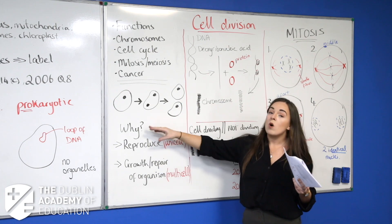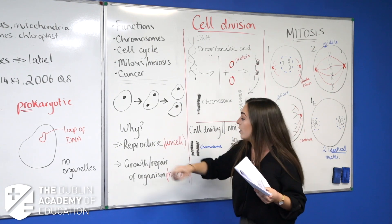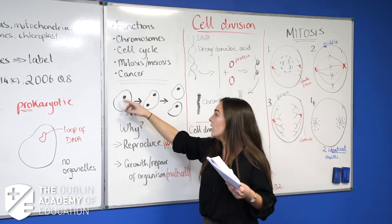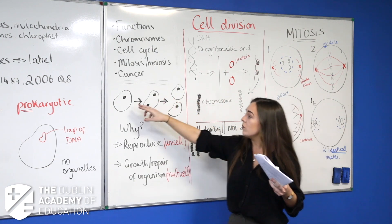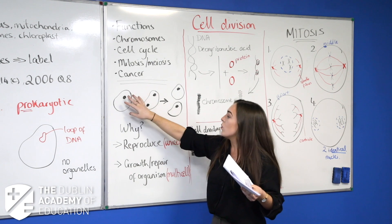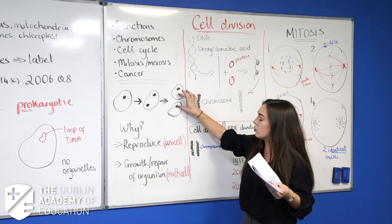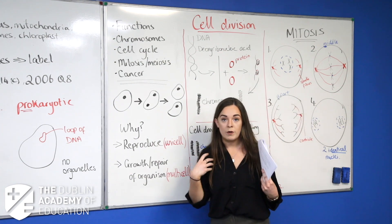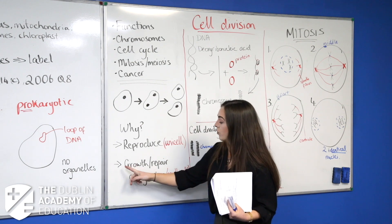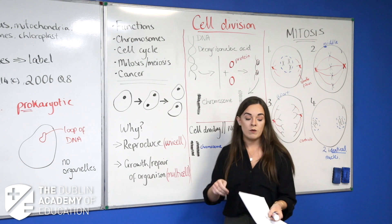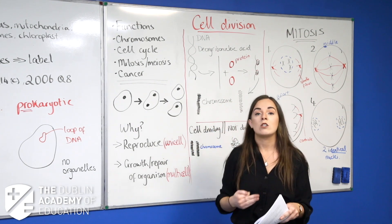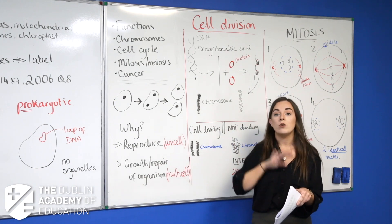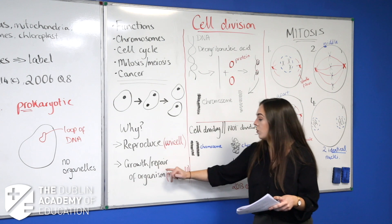There are different functions of cell division. One is reproduction: if you have a single-celled organism — say a prokaryotic cell with no nucleus — when it divides and produces two new cells, you've reproduced. For multicellular organisms like us, made of trillions of cells, cell division allows for growth and repair. If you get a cut, cells divide to form new layers of skin and heal the wound.